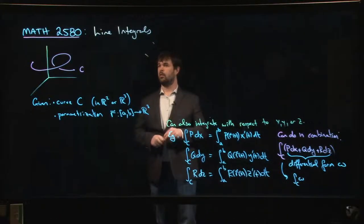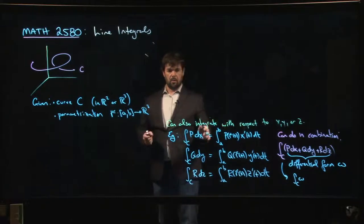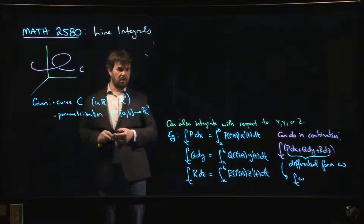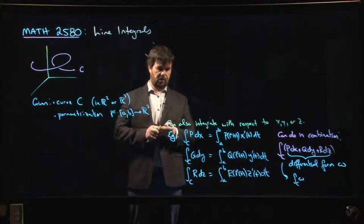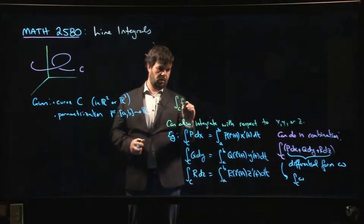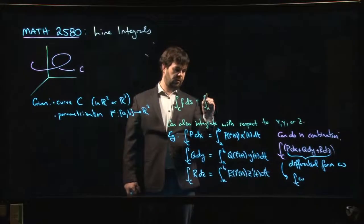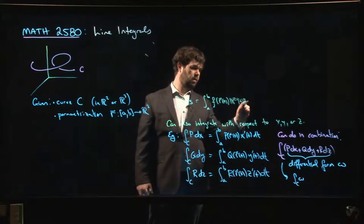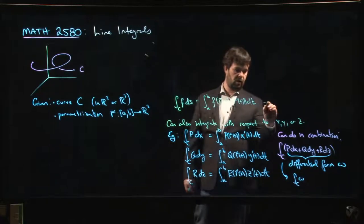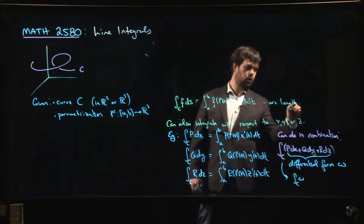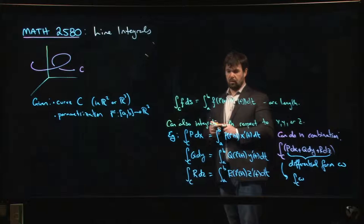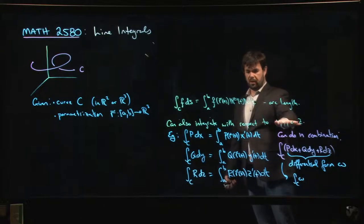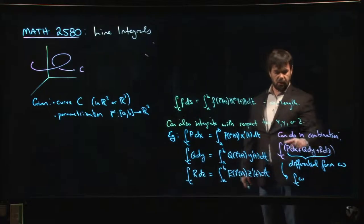This will be the last video we have time for today. In the last video we recapped this idea: if you have a function defined along a curve, you can define the arc length integral — the integral of f ds — as the integral from a to b of f(r(t)) times the length of r'(t) dt. We also talked about how you can integrate with respect to the coordinate variables individually — x, y, or z — and even in combinations.